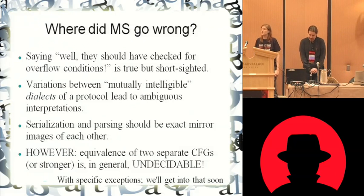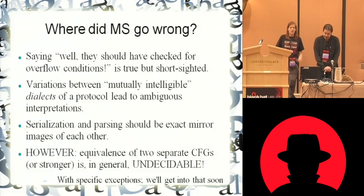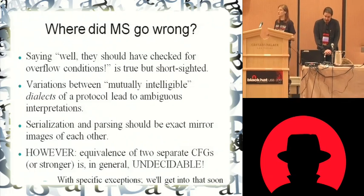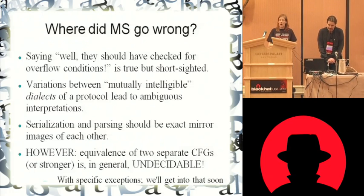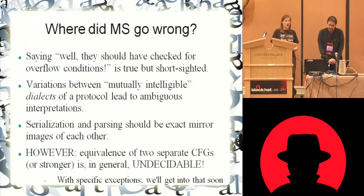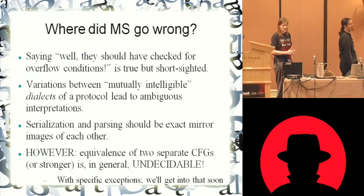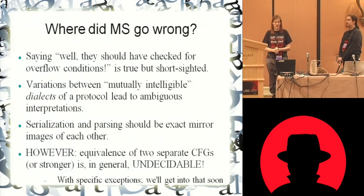So if you have two implementations of the same protocol but they vary slightly, what you end up with is dialects that are, for the most part, mutually intelligible — kind of like Swedish and Norwegian. Unfortunately, the problems arise in the parts where they're not mutually intelligible, and you end up with ambiguous interpretations.